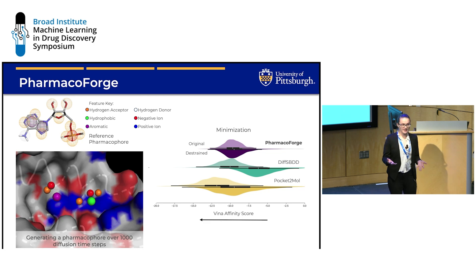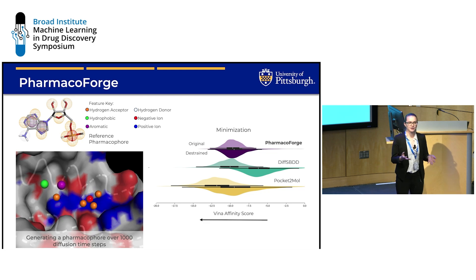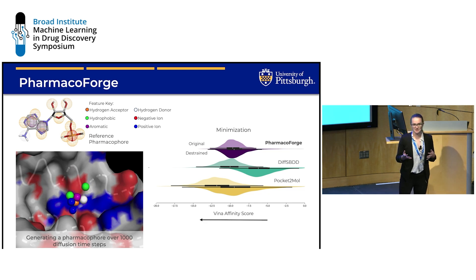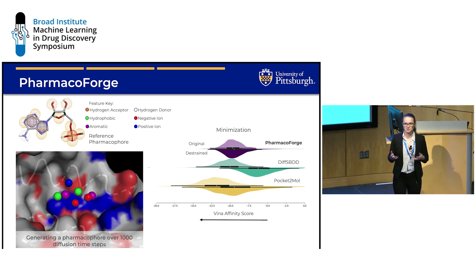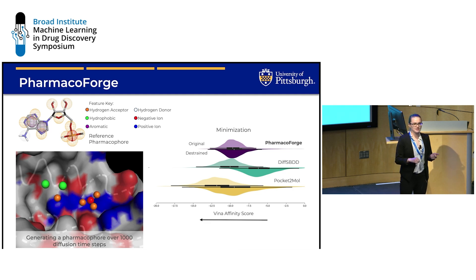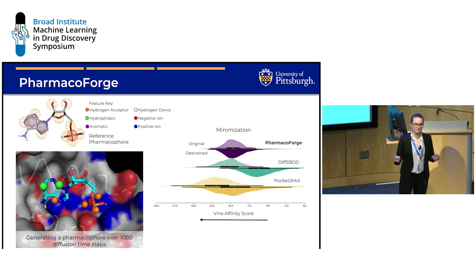So how do we find this ligand? There are two main categories of techniques. One is virtual screening, where you screen databases of known commercially available molecules, so whatever you find is commercially available and ready for testing. The drawback is that it takes a really long time, and that time scales with the size of the database.